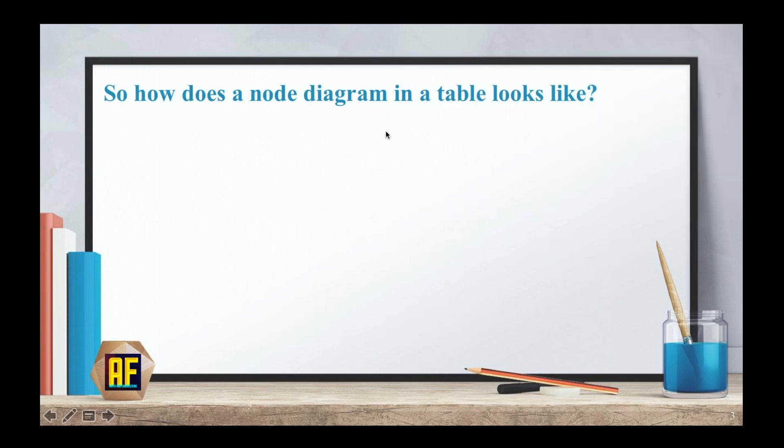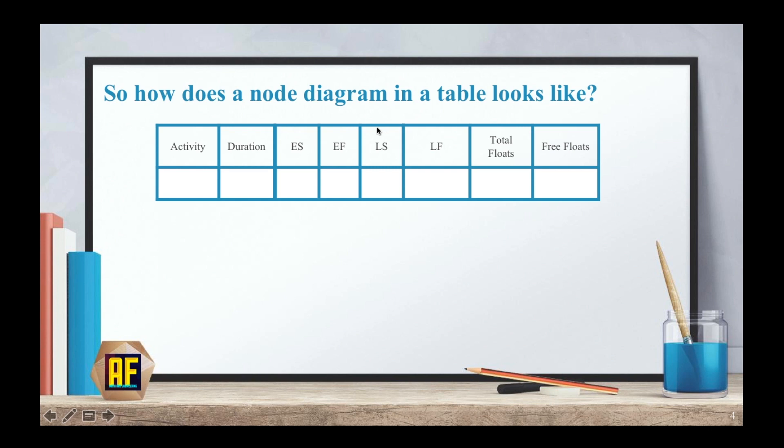So how does a node diagram in a table look like? In our upper part we have our activity, duration, early start, early finish, late start, late finish, total floats and a new concept called free floats.